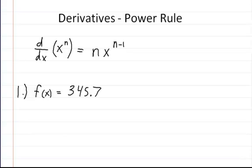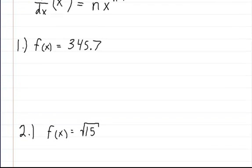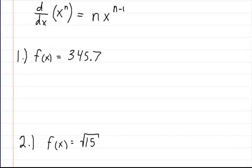So here you have f of x is equal to 345.7, and we need to take the derivative of that. So if you recall that when you take the derivative of a constant, it's always zero.